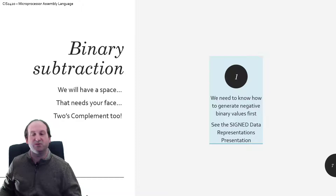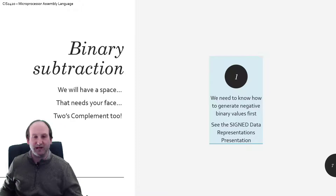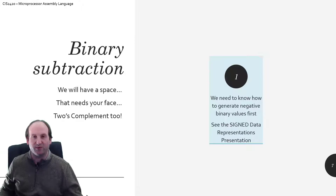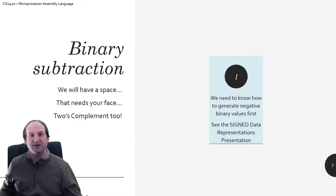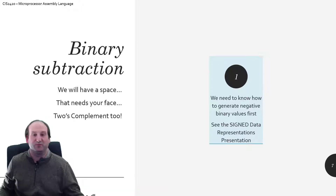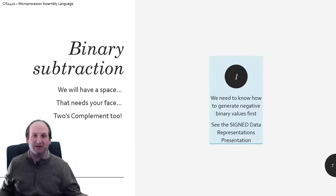Binary subtraction will be covered in a future video — next week in the lecture series, week 3 — where we'll talk about 2's complement math and how to turn a positive number negative and vice versa. In actuality, when the CPU subtracts A minus B, it turns B into negative B and adds the two together. So we're still doing addition when we do subtraction.